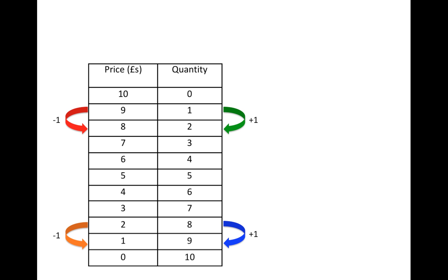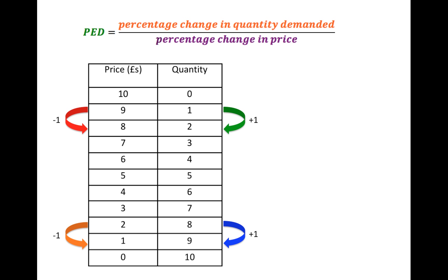A priori, by looking at this data, it seems like it doesn't really matter at what point of the demand we are — the demand reacts in the same way to a change in price. The key here is the formula for the PED, because price elasticity of demand is measured as a percentage change in quantity demanded divided by a percentage change in price. In other words, it's a relative measure.